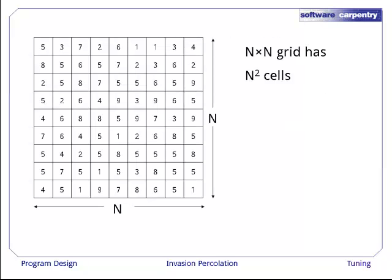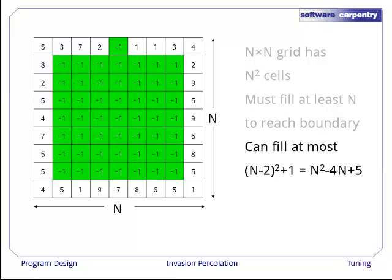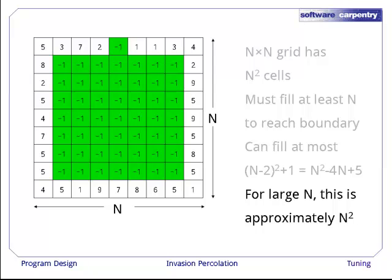Our n by n grid has n squared cells. We have to fill at least n of those cells to reach the boundary. But in the worst case, we can fill as many as n minus 2 squared plus 1 or n squared minus 4n plus 5 cells to hit the boundary. For large n, this is approximately n squared. The ratio between n squared and the polynomial shown above goes to 1 as n gets very large.